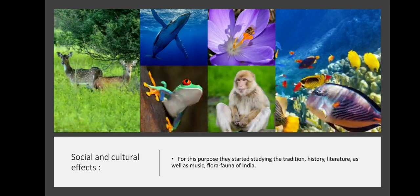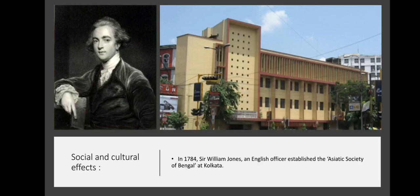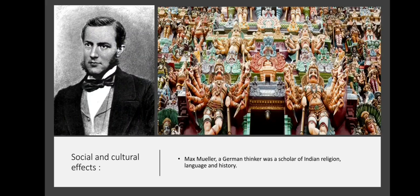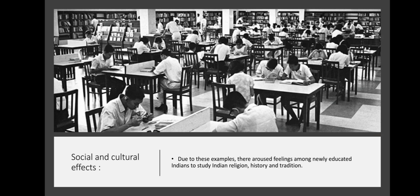In 1784, Sir William Jones, an English officer, established the Asiatic Society of Bengal at Kolkata. Max Müller, a German thinker, was a scholar of Indian religion, language and history. Due to these examples, feelings arose among newly educated Indians to study Indian religion, history and tradition.